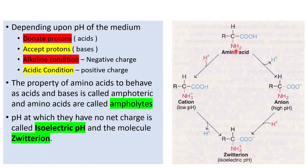Depending upon the pH of the medium, the amino acid can behave as an acid or as a base. If we increase the pH and make it alkaline, the amino acid donates a proton and becomes negatively charged. The H from the carboxyl group is removed and it develops a negative charge, so amino acids in alkaline medium will develop a negative charge.